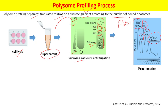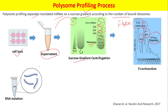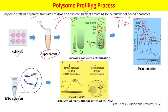In the next step, total RNA is isolated from each of these fractions. After isolation of total RNA from each fraction, we can proceed with two types of analysis.